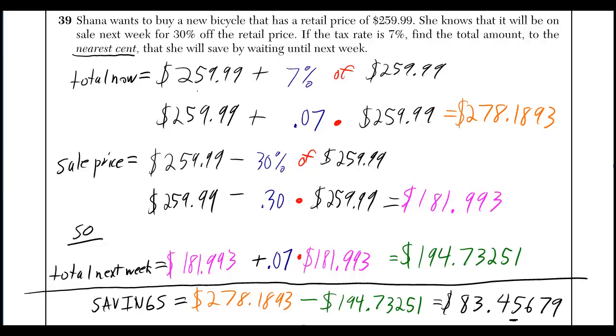The total now is not just $259.99, she also has to pay 7% tax. So 7% of $259.99 is the same thing as 0.07 times $259.99. 'Of' can be replaced with times. If you do that calculation, you'll get $278 point blah blah blah. It's important to keep the decimals because we don't want to round until the end. Otherwise, we might be off by a cent and get the problem wrong.